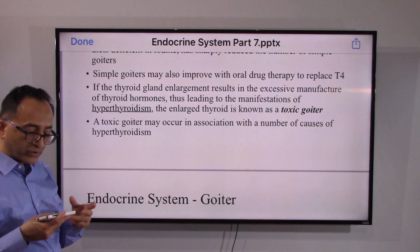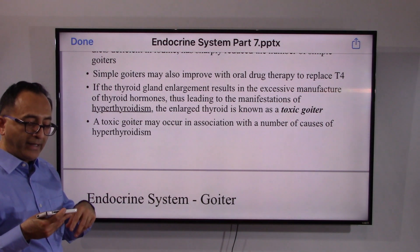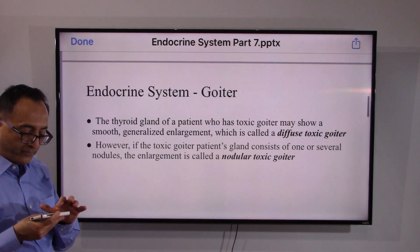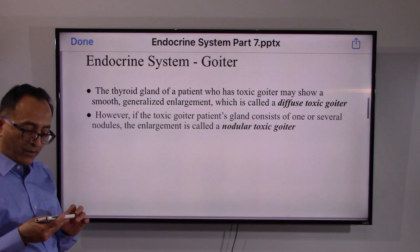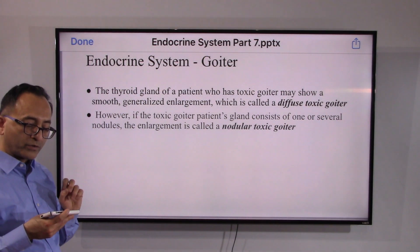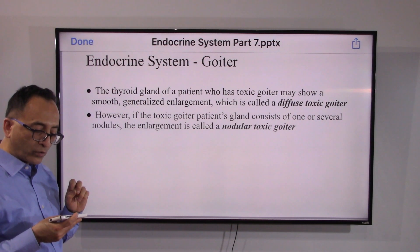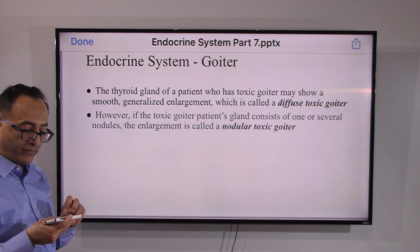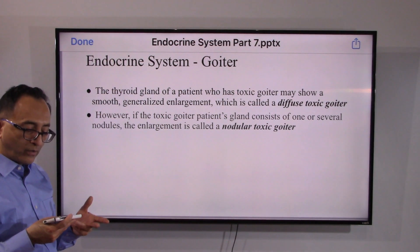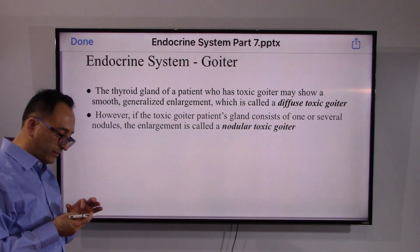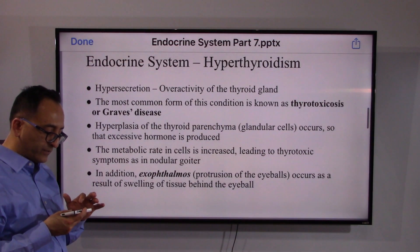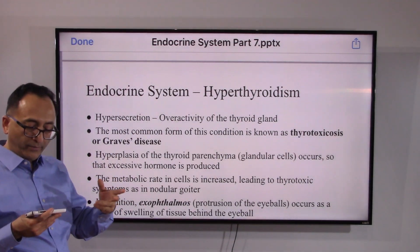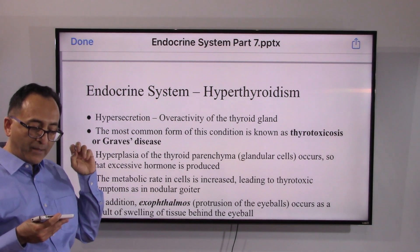Goiter can be toxic and can lead to excessive thyroid hormones, labeled as hyperthyroidism. There is a term called diffuse toxic goiter — this is when a toxic goiter shows smooth, generalized enlargement. Nodular toxic goiter is, of course, when you have nodules present, as the name indicates.